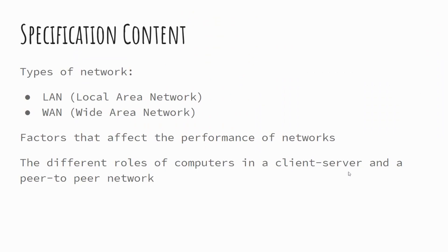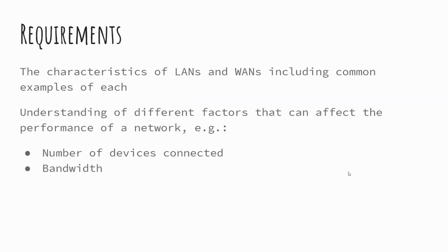The specification content covers what LANs and WANs are, factors that affect the performance of a network, as well as the different roles of computers in a client-server and peer-to-peer network. We want to pay close attention to the characteristics of LANs and WANs, some examples of each, and factors such as number of devices connected and bandwidth.